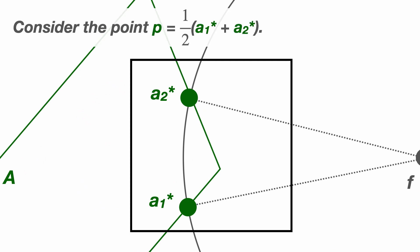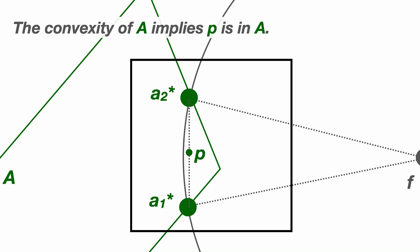Consider the point P halfway between A1 star and A2 star. Since it's on a line connecting A1 star and A2 star and capital A is convex, this implies that P is in capital A and so P is also a valid approximation to F. But here is the crucial part of the proof.